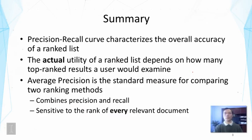To summarize, the precision-recall curve can characterize the overall accuracy of a ranked list. The actual utility depends on how many top-ranked results a user would examine, and some users will examine more than others. Average precision is a standard measure for comparing two ranking methods — it combines precision and recall and is sensitive to the rank of every relevant document.